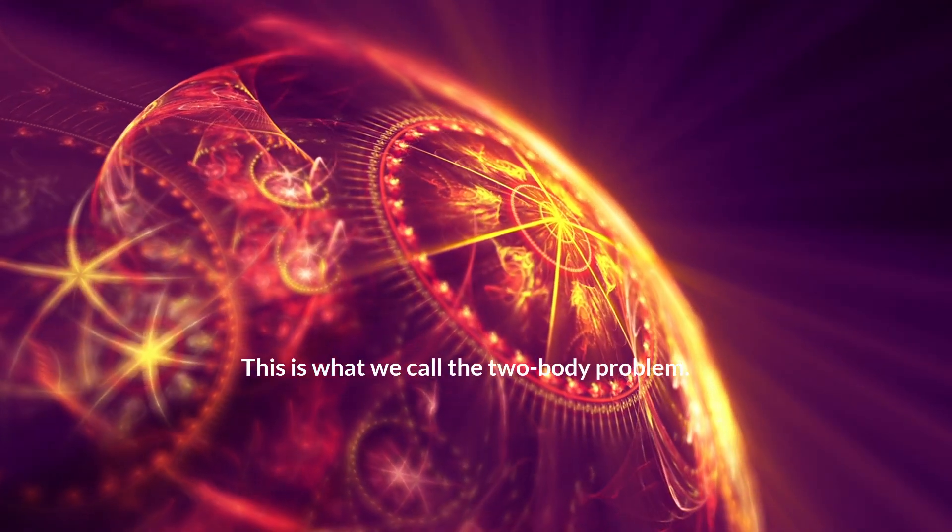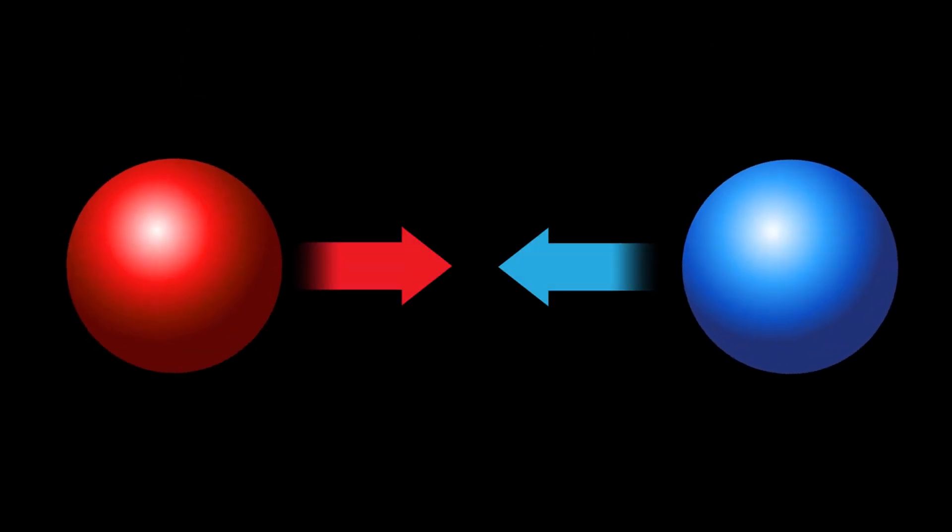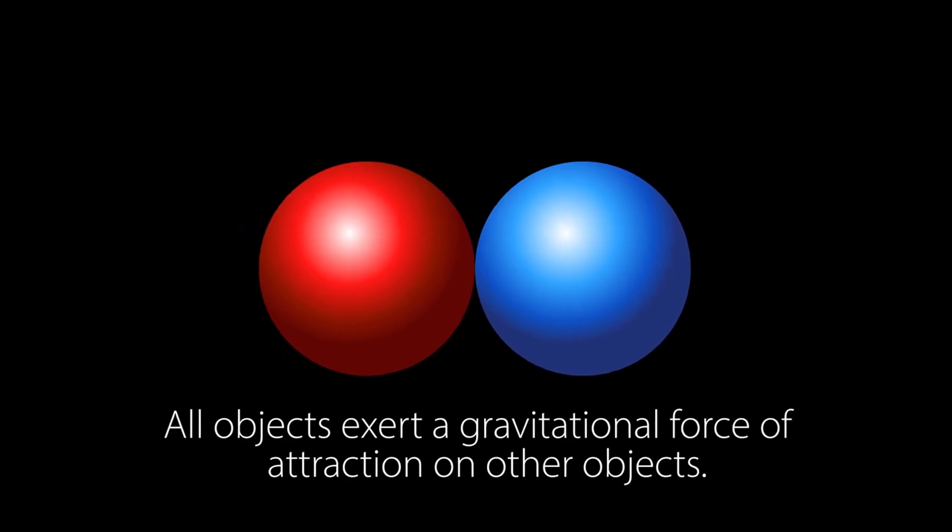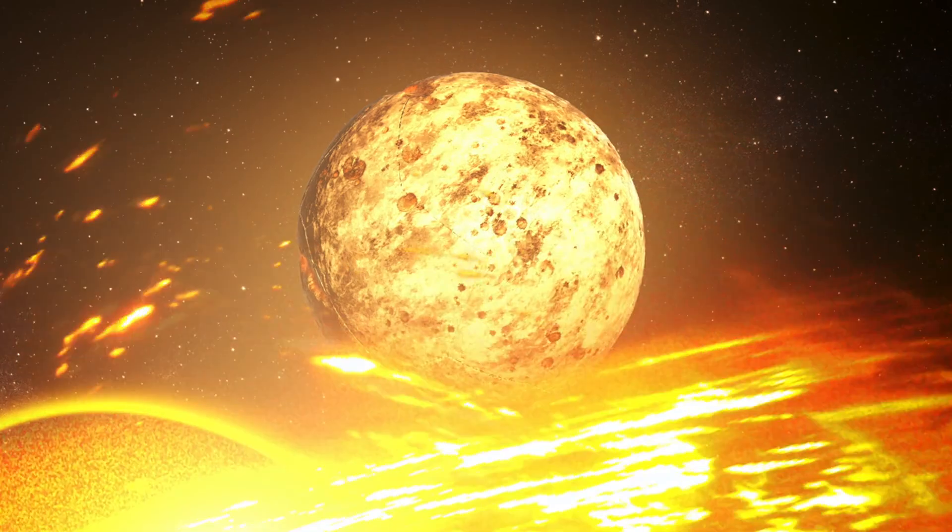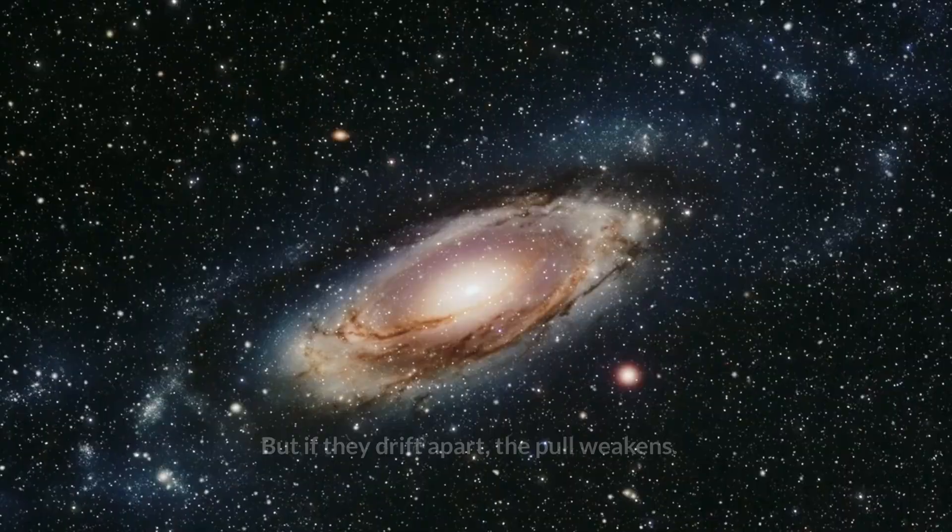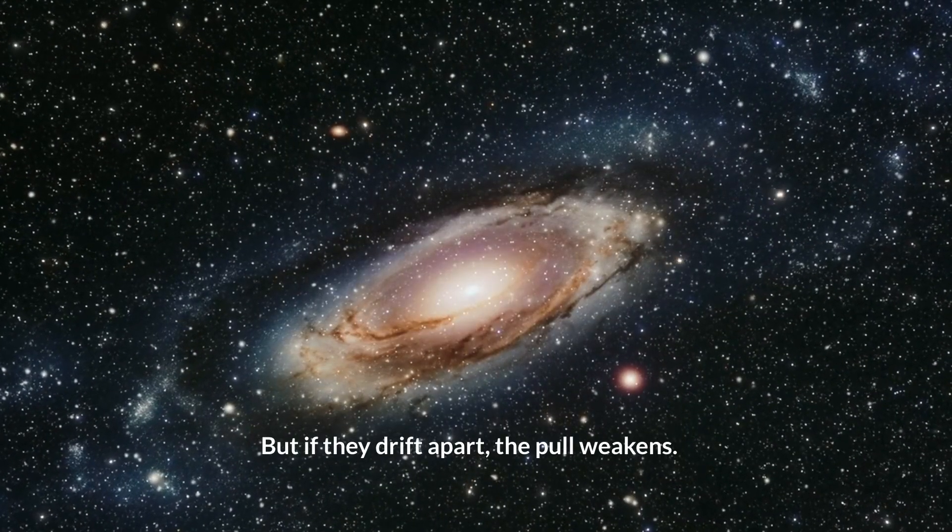This is what we call the two-body problem. The strength of the gravitational force between these two bodies depends on two things: their masses and the distance between them. Picture it like a tug-of-war. The heavier the bodies and the closer they are, the stronger the tug. But if they drift apart, the pull weakens.